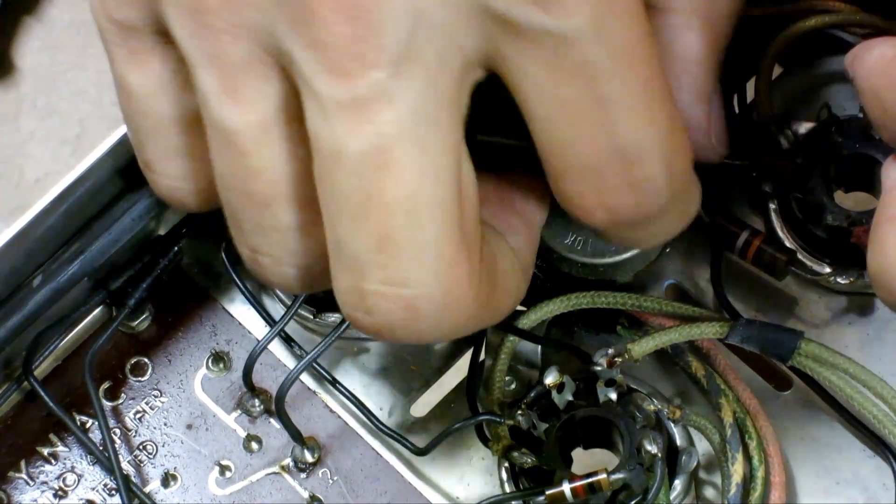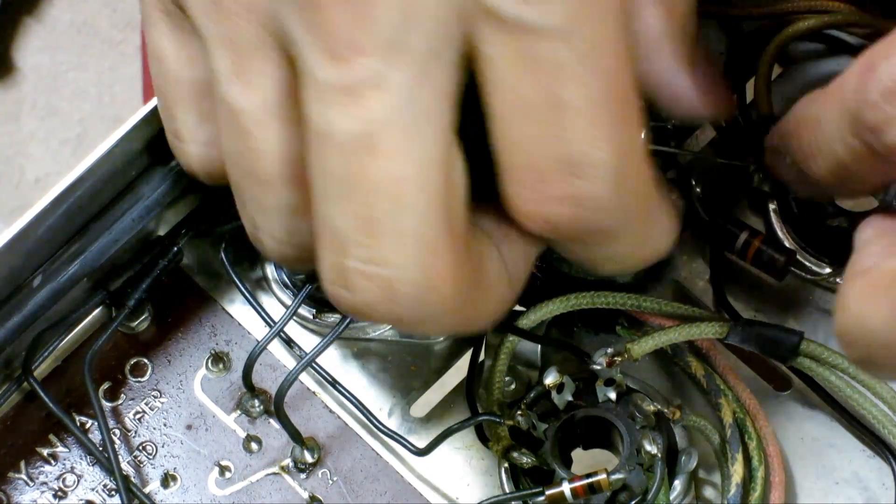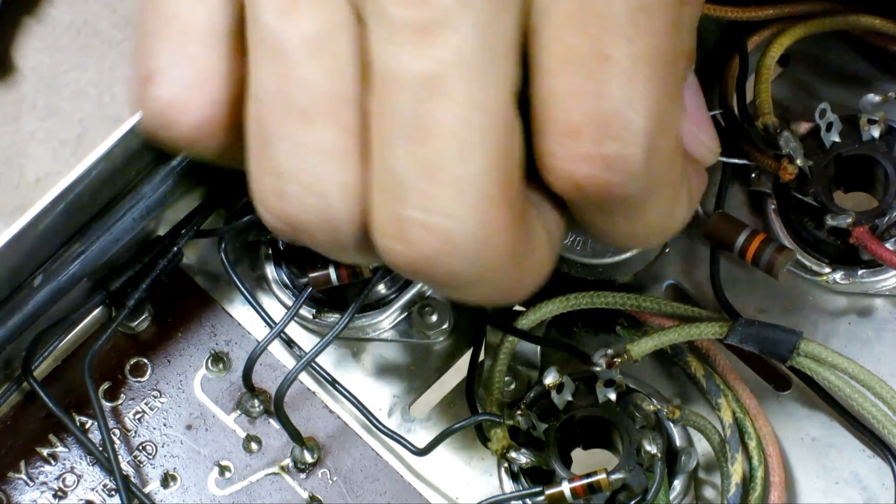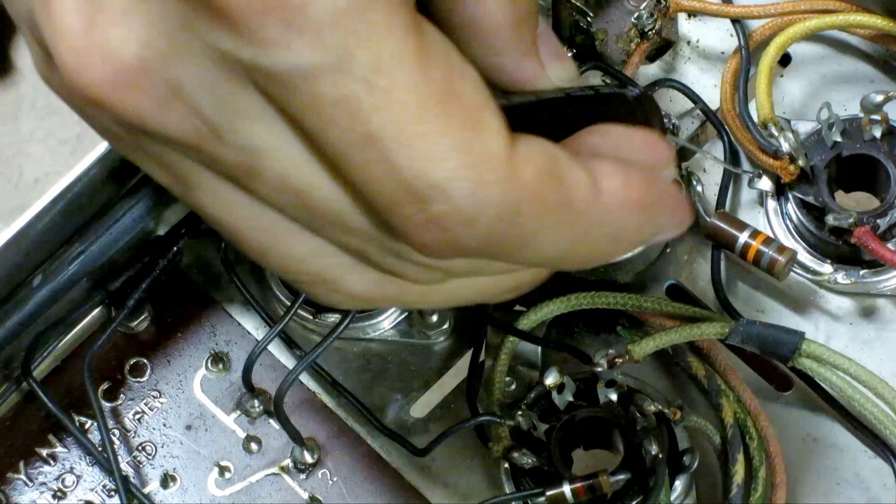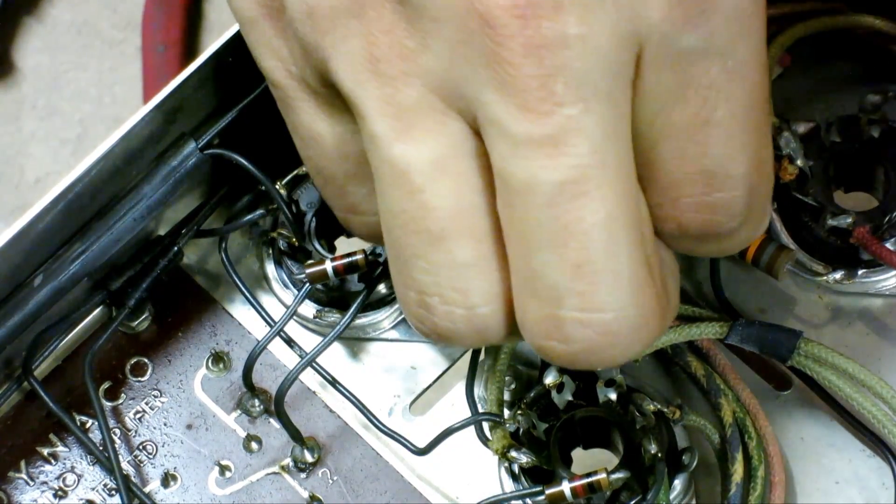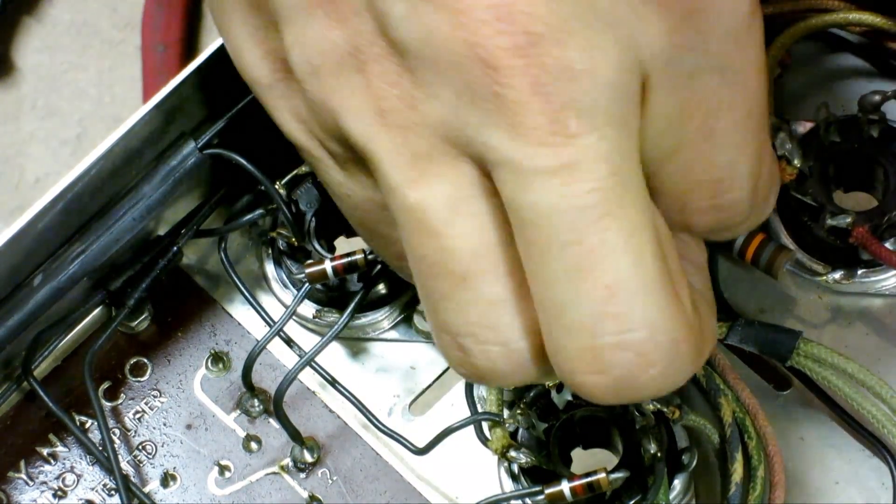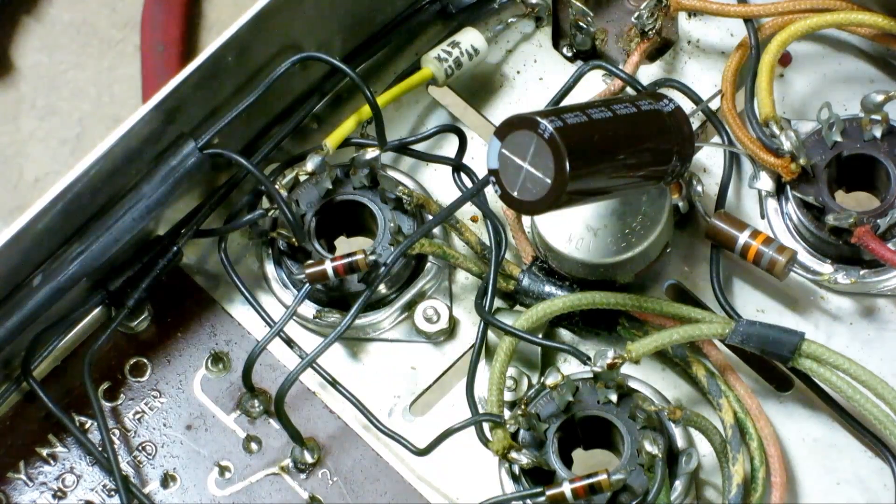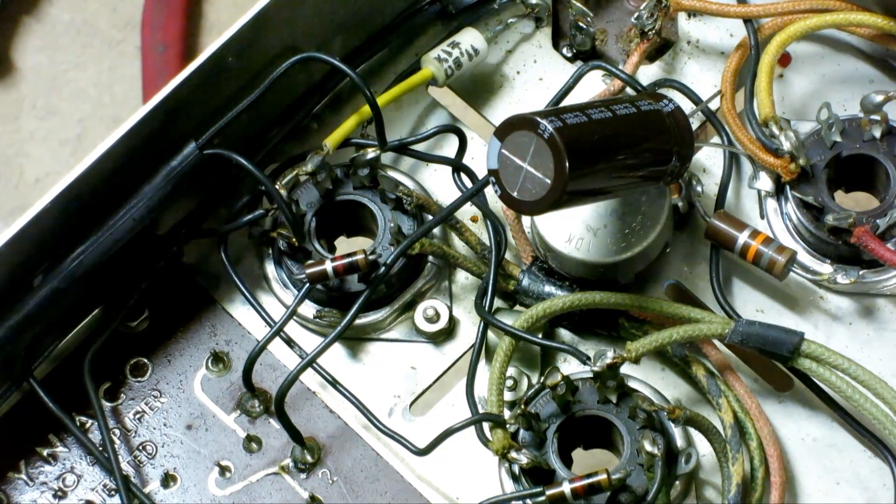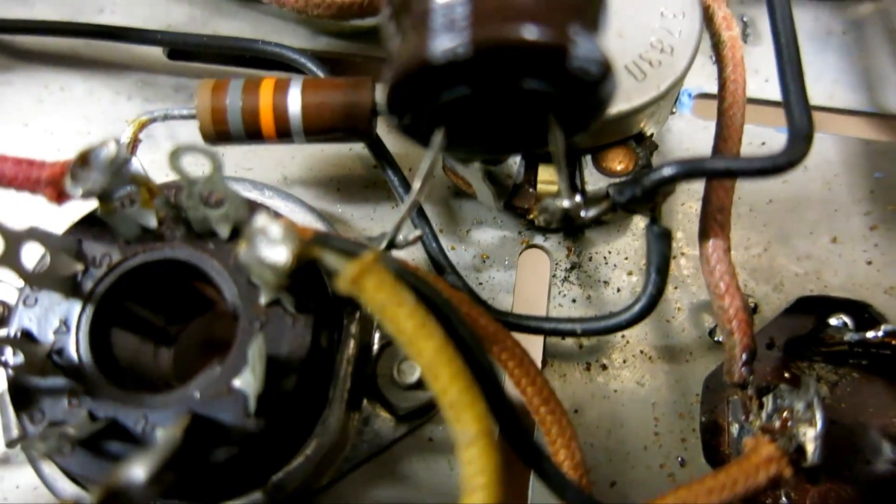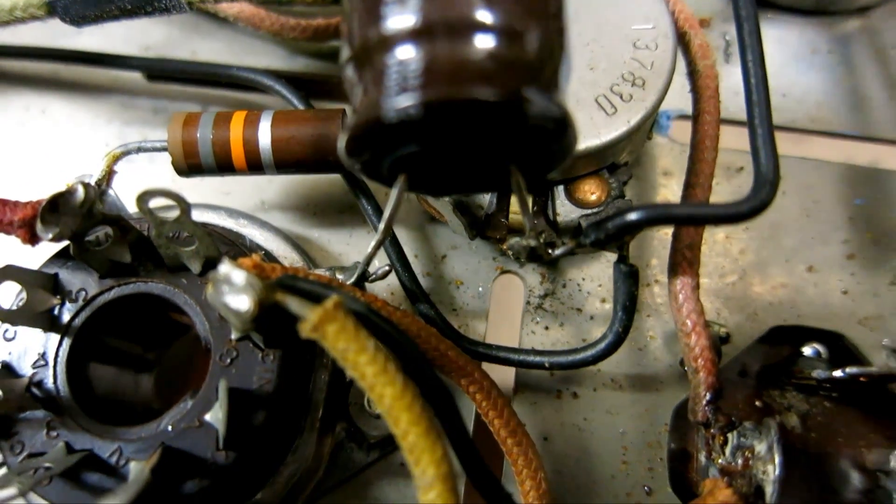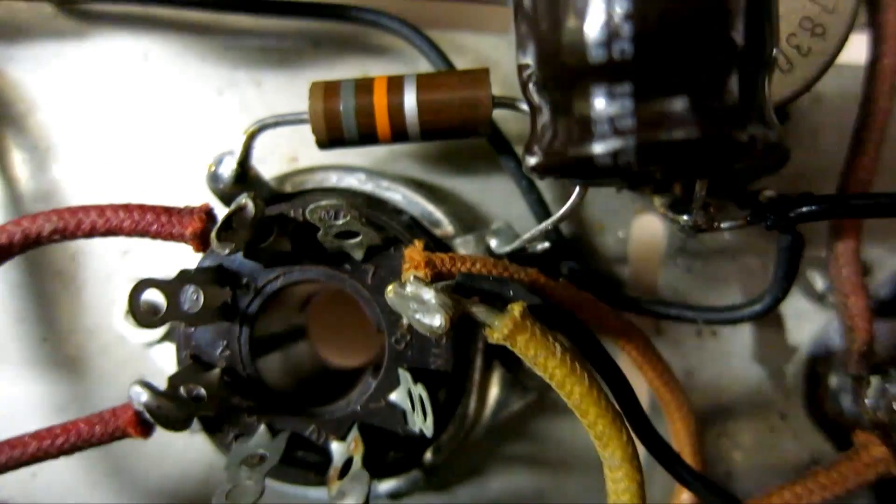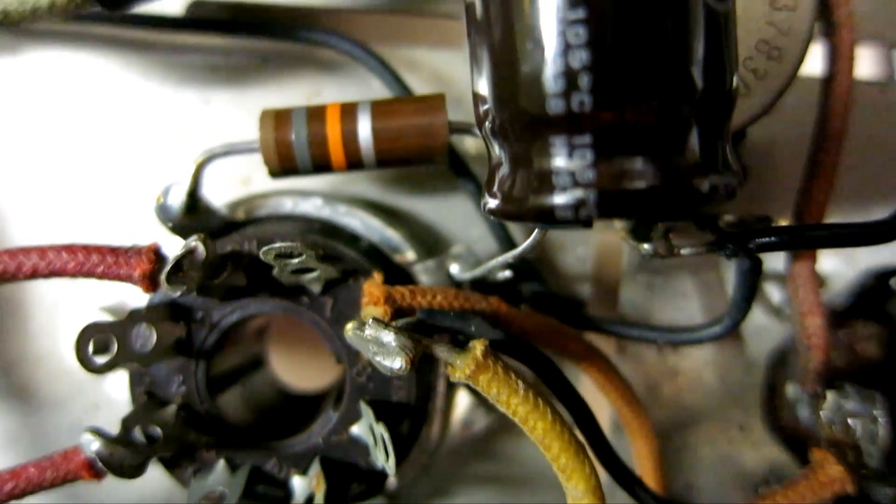And then the positive, I'm just going to fish it through the side right here to this ground. Again since the chassis is ground, so I'm just going to fish it through here. And just like before I'm just going to hook it in tight and then solder it. So as you can see the negative is connected to the center of the pot and then the positive is connected to the ground, the chassis.